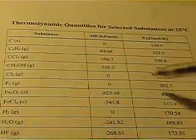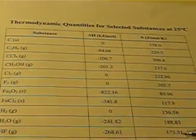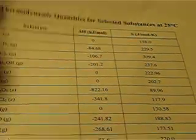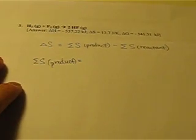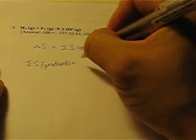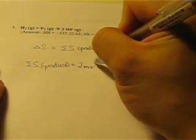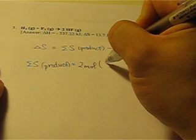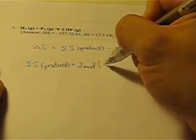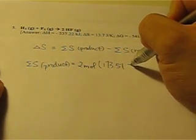And then you go down to the corresponding chemical, and you see 173.51. That's the value we're going to use. And it is the same as the change of enthalpy that we're going to include the coefficient in the front. So 2 moles times the value of hydrogen fluoride, which is 173.51.